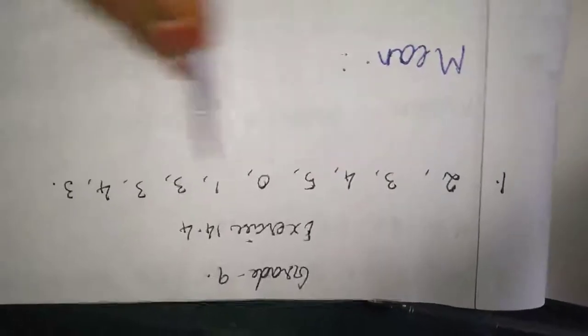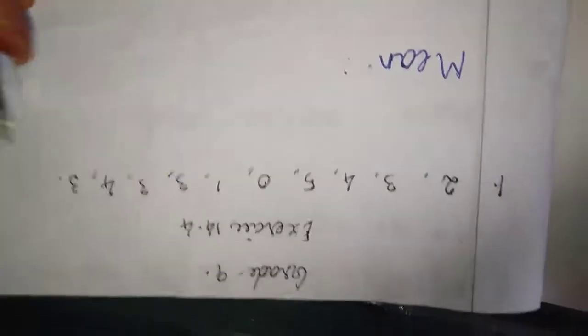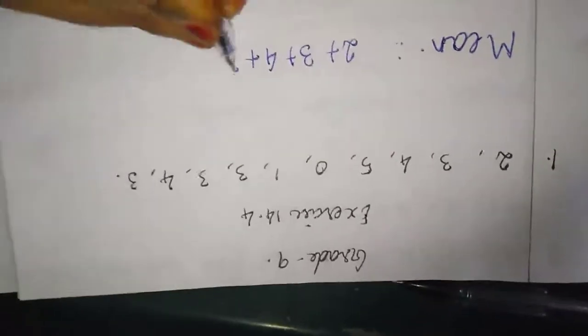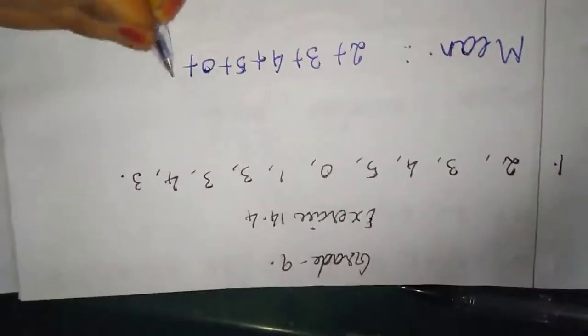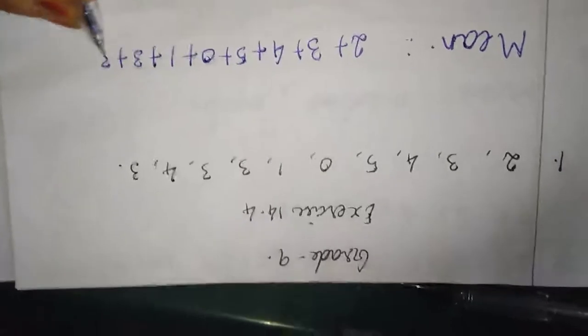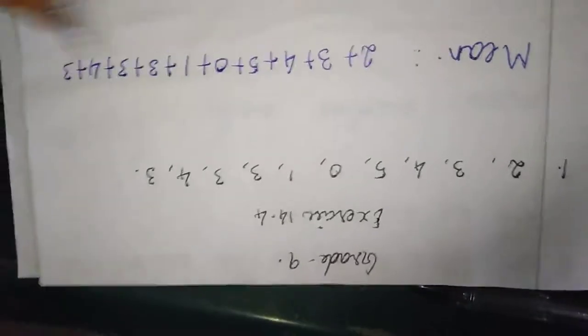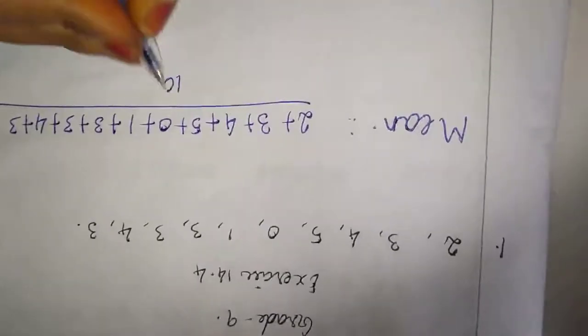For the 10 matches, we need to find mean, median, mode. Mean means you have to add everything and divide by how many numbers we have. So 2 plus 3 plus 4 plus 5 plus 0 plus 1 plus 3 plus 3 plus 4 plus 3, divided by how many numbers? They're telling us 10 matches, so divided by 10. This is the mean.